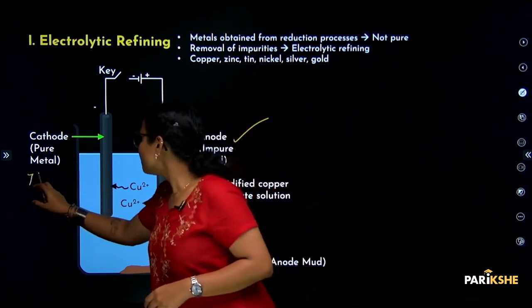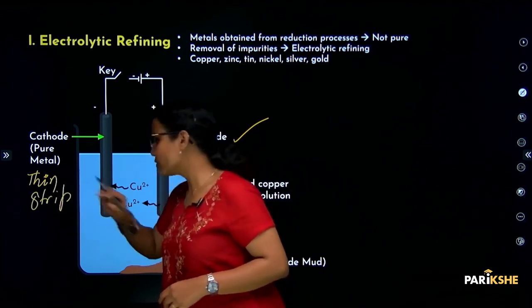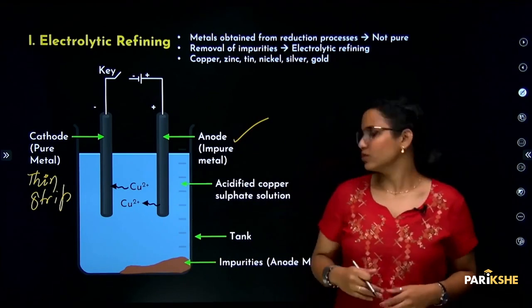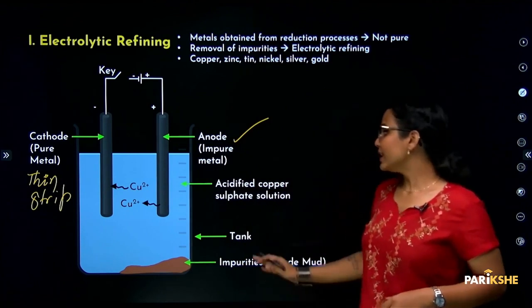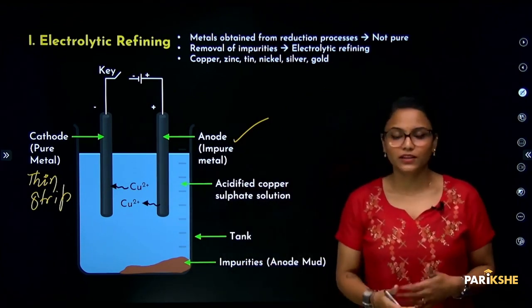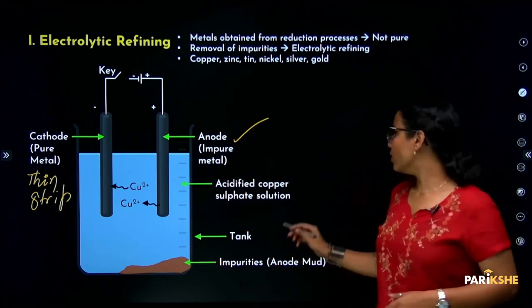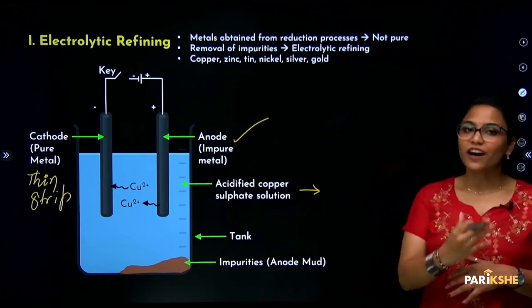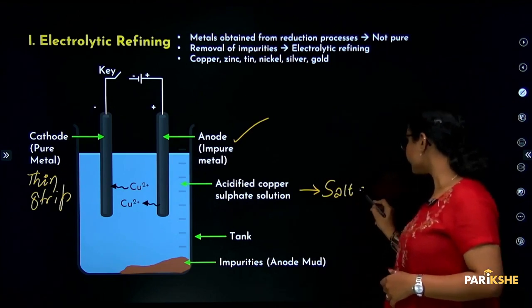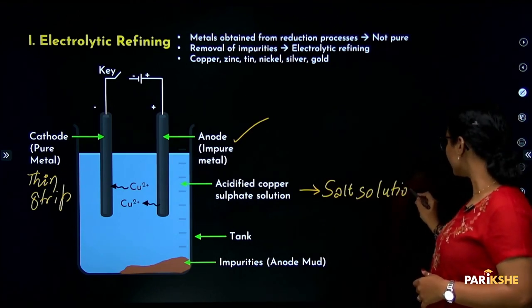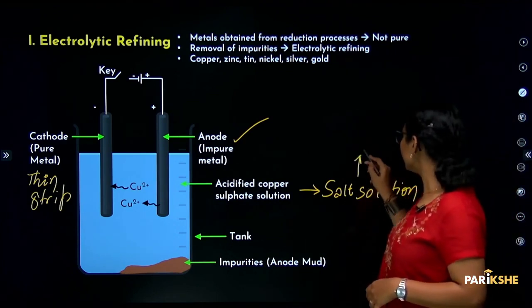A thin strip of pure metal is used as the cathode. That metal's salt solution is used as the electrolyte.